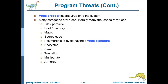A virus dropper inserts a virus onto the system. Many categories of viruses exist. File viruses are parasitic — they integrate themselves with files. Boot viruses are memory-based and dangerous: if boot files are infected, the operating system can be corrupted. Macro viruses use recorded action sequences; Excel files containing macros trigger a security warning because viruses can be produced using macros.